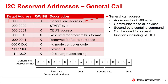If the LSB of the second byte is a 0, the second byte may be used to send commands to those devices receiving the general call. For example, one of the common commands sent through the general call is a reset. If the second byte is 0x06 in hexadecimal, the controller device sends a general call reset to all devices on the I2C bus.